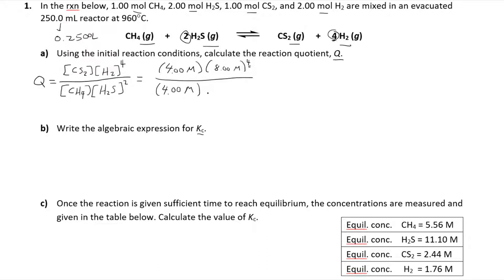Then finally we had 2 moles of dihydrogen sulfide, so that gives us 8 molar, and that's squared. So if you crank all that out and do your arithmetic to the right number of sig figs, I get 64.0 as our reaction quotient, abbreviated as Q.